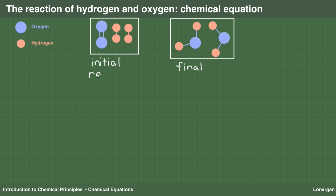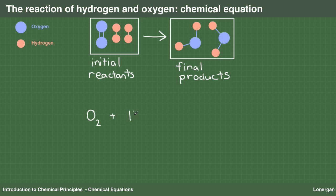The initial compounds in a chemical reaction are called the reactants. The final compounds are called the products. A chemical equation writes the chemical formula for the reacting species on the left, then an arrow to indicate a reaction, and the chemical formula for the product species on the right.